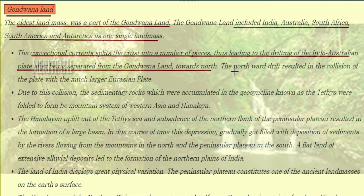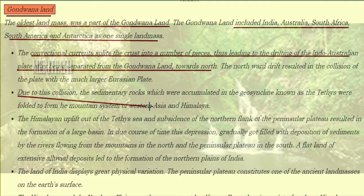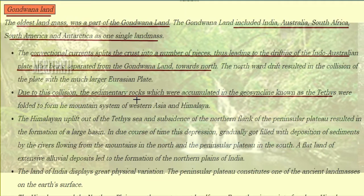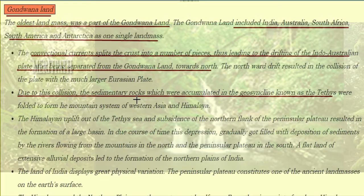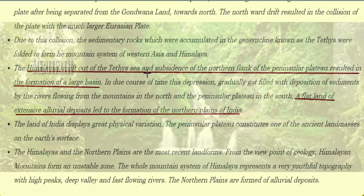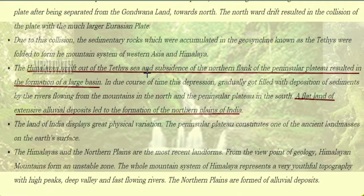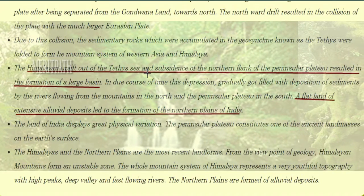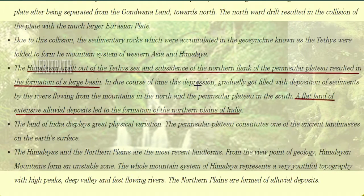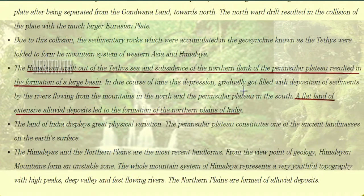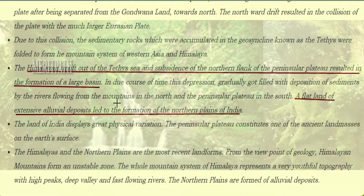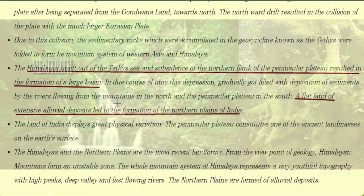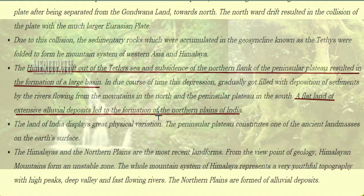After being separated from the Gondwana land, the northward drift resulted in the collision of the plate with the much larger Eurasian plate. Due to this collision, the sedimentary rocks accumulated in the geosyncline, the Himalayan uplift of the Tethys Sea and subsidence of the northern flank of the peninsular plateau resulted in the formation of a large basin. Over time, this depression gradually got filled with sediments deposited by rivers flowing from the mountains in the north and the peninsular plateau in the south, leading to the formation of the northern plains of India.